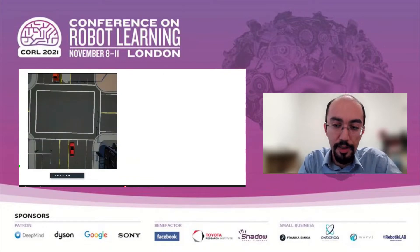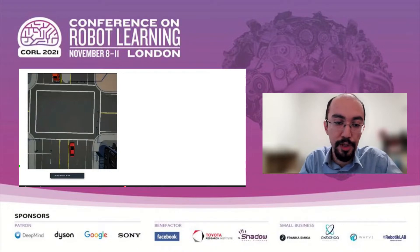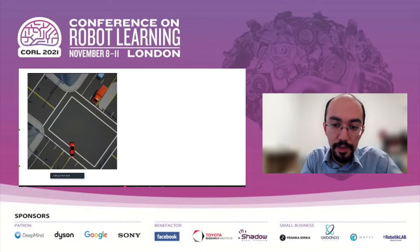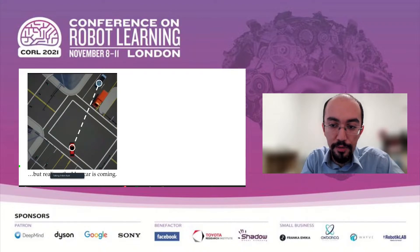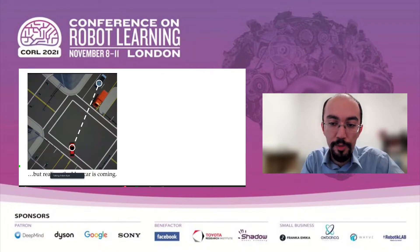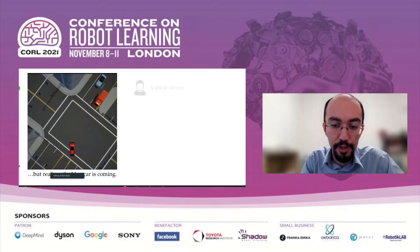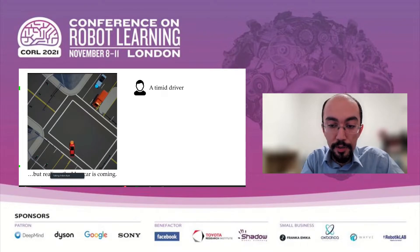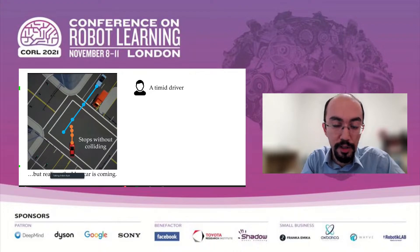Let's consider an example scenario. Here we have the red autonomous car who wants to make a left turn. It starts turning, but then it realizes the blue car, which is coming from the opposite direction and was previously occluded behind the red truck. Depending on its policy, the autonomous car may make different decisions. If it's using a reward function learned from comparisons made by a timid driver, the car may stop and give way to the blue car, avoiding an accident.